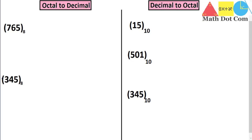How can we do that? Since its base is 8, we have to multiply these digits by powers of base 8. I'll write the base 8 first, then assign locations: 5 is at location 0, 6 is at location 1, and 7 is at location 2. The location number will be the power of 8.